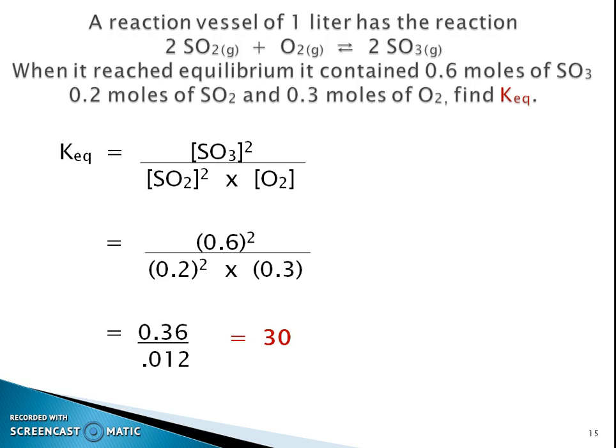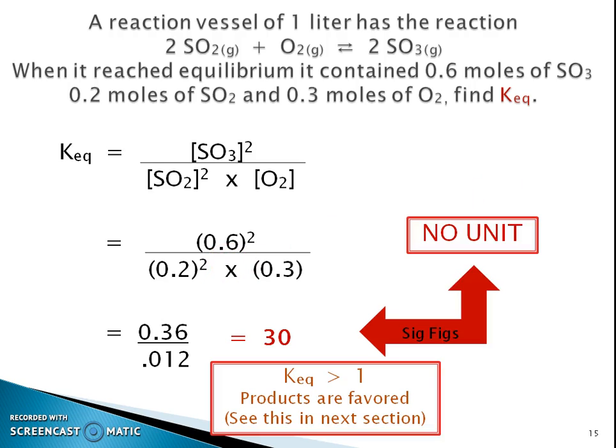Just make sure that you have the correct equation, putting in the correct numbers, making sure that you're using your exponents correctly, and multiplying. So again, there's no unit, and this would be the equilibrium is greater than 1, so the products are favored. You're going to see more information on this in the next section, but think about this. If your ratio is products over reactants, and you have a bigger number than 1, then that means the top number of that ratio is going to be big. If the top number is big, that means we have more products than reactants, so the forward reaction is favored. And yes, your KEQ, your constant, does not have a unit in this case.